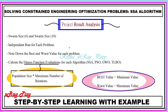This is a disadvantage that can lead to an infinite number of successive trials to obtain the optimal solution. To avoid this, we make independent runs for each problem, change the number of iterations, and note the best and worst values for each problem — where best is the minimum value and worst is the maximum value. We then calculate the fitness function evaluations for each algorithm.